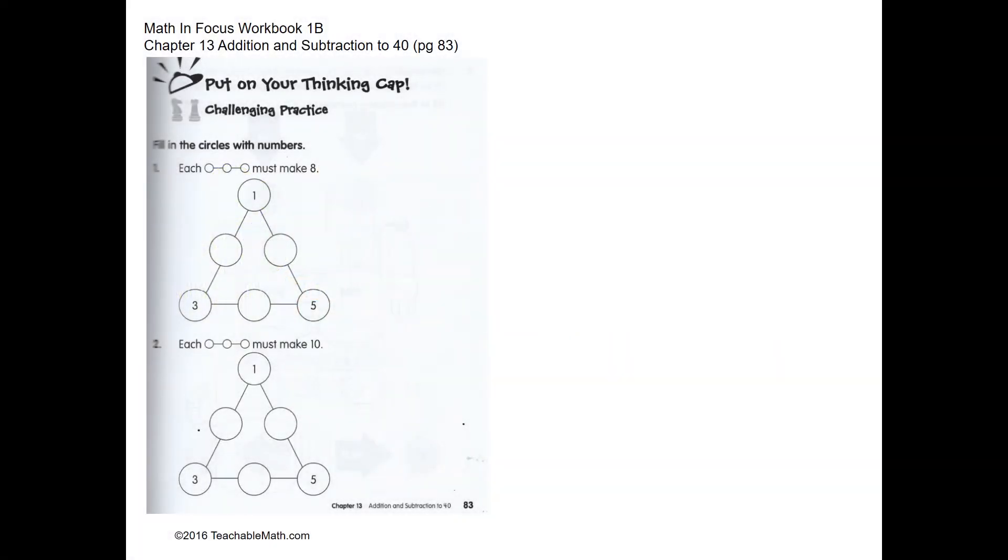This is a question on number sense. Each row must make eight. Over here we have four, so we need four more to make eight. Over here we have eight, so we need zero more to make eight. Over here we have six, so we need two more.